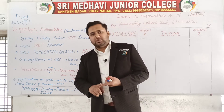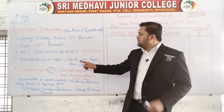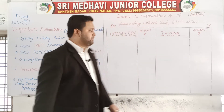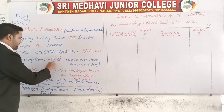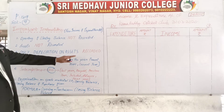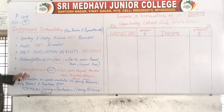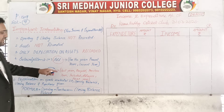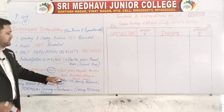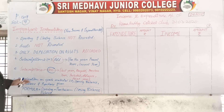Regarding subscriptions: if outstanding subscription is given for the current year, you need to add it to the subscription amount. On the other hand, you need to subtract last year's subscription, prepaid subscription, previous year's advance included, and next year's subscription from the subscription amount.